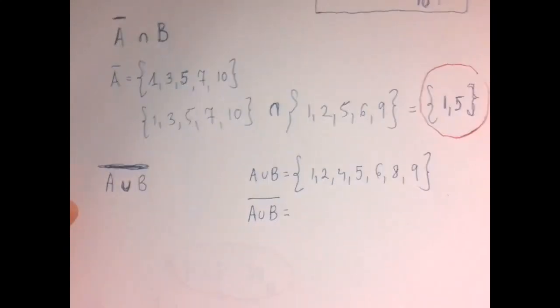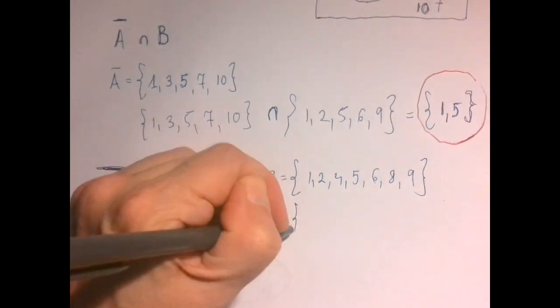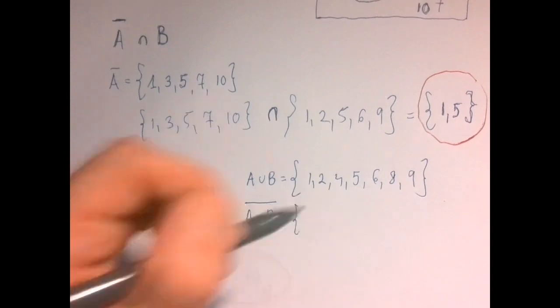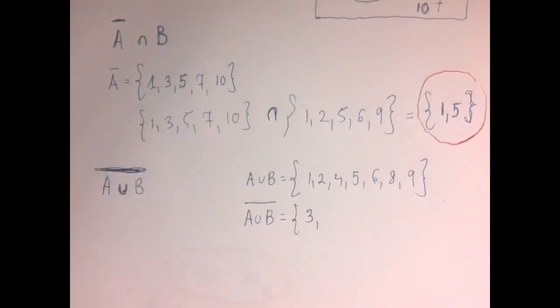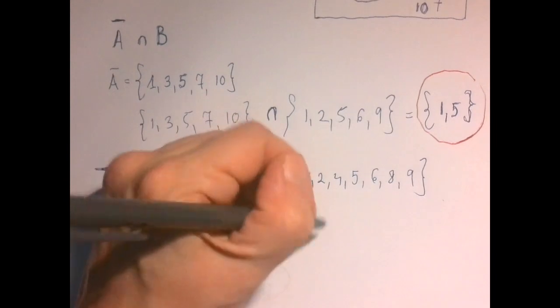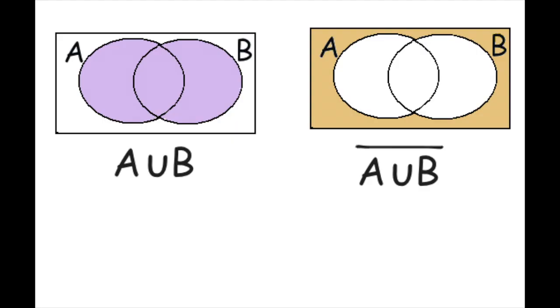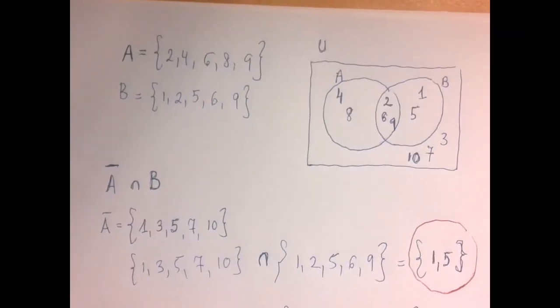So the complement of the union would be everything except for these numbers. We have 7 numbers here, so the other 3 will. 1 and 2 are here, 3 is not here, so it goes into the complement. 4, 5, 6, 7 is not there, and then 10. So what we have visually would be, what is in the complement of the union of A and B. That is exactly outside of both A and B, and that is our set with 3, 7, and 10.